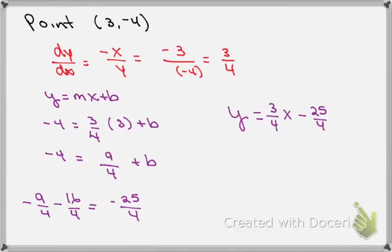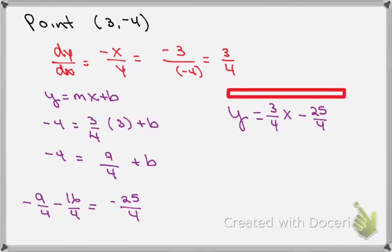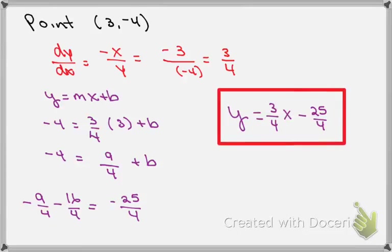So now that I know b, the equation of the line I'm looking for is y equals minus 3/4 x plus 25/4. If you look at this work, you'll see how you can generate the tangent line for the second point (3, -4), and that tangent line is y equals 3/4 x minus 25/4.